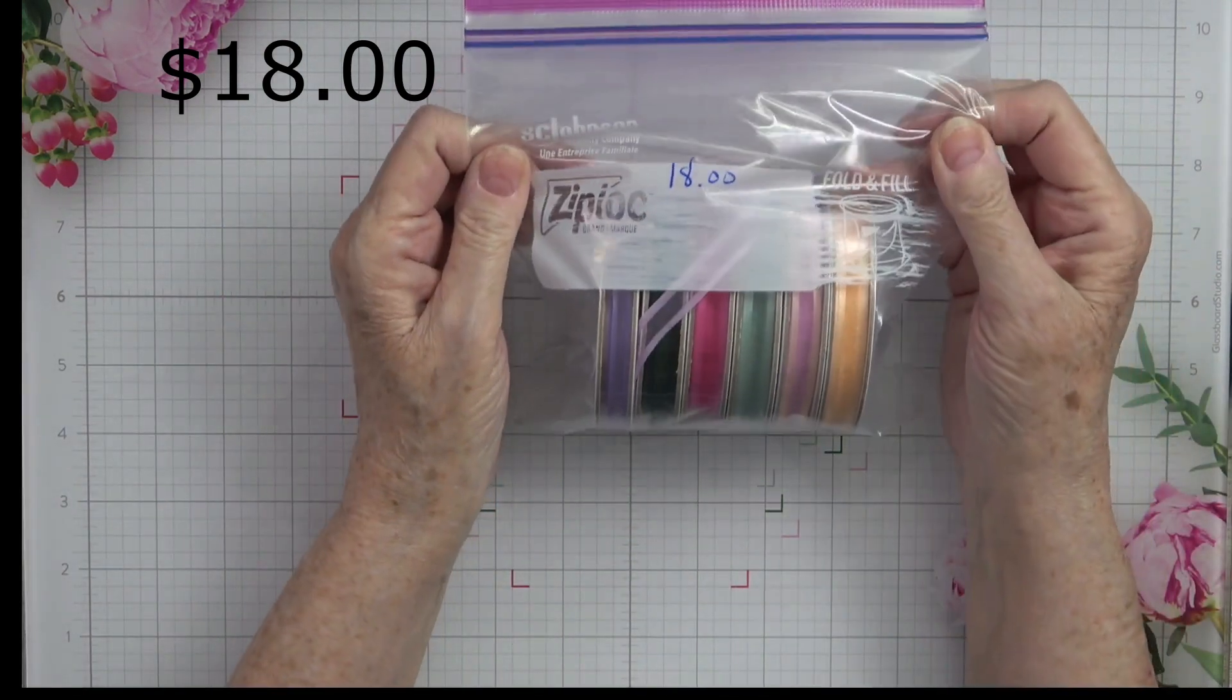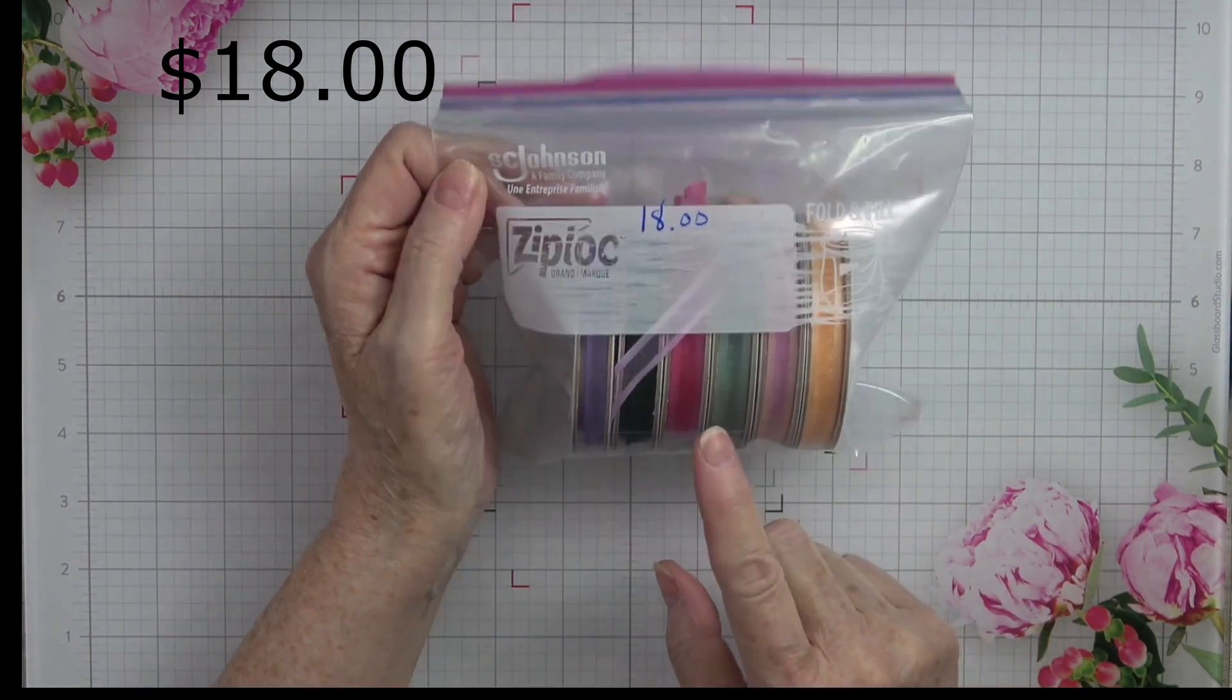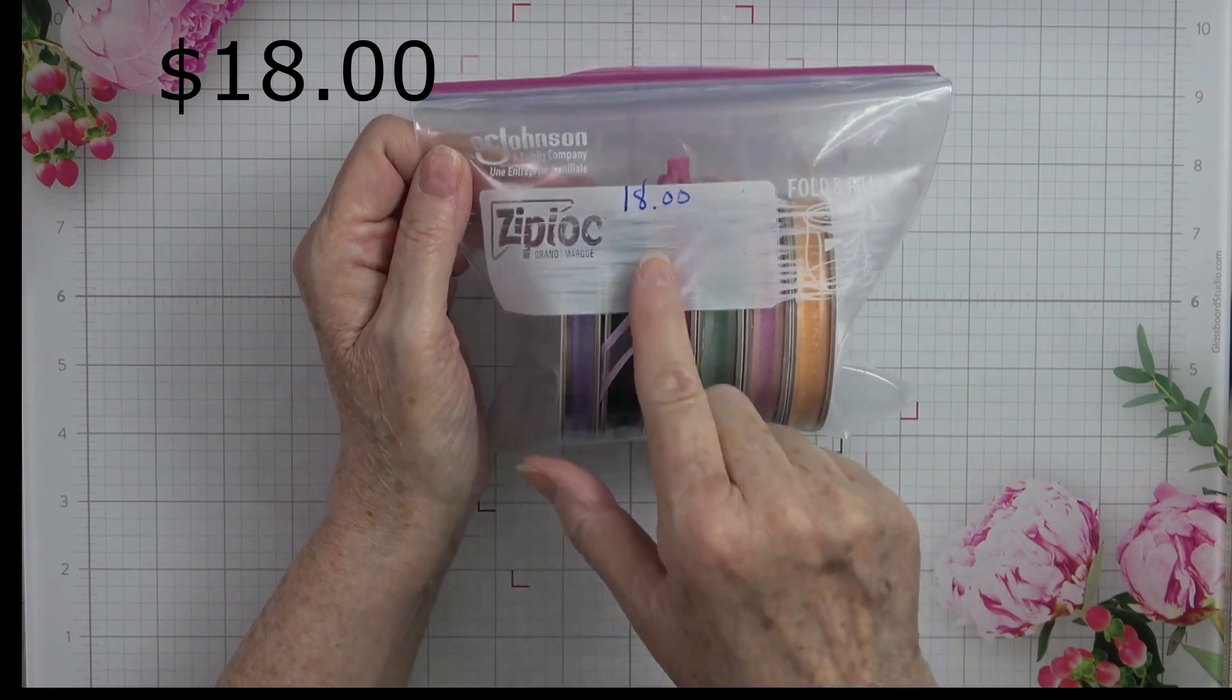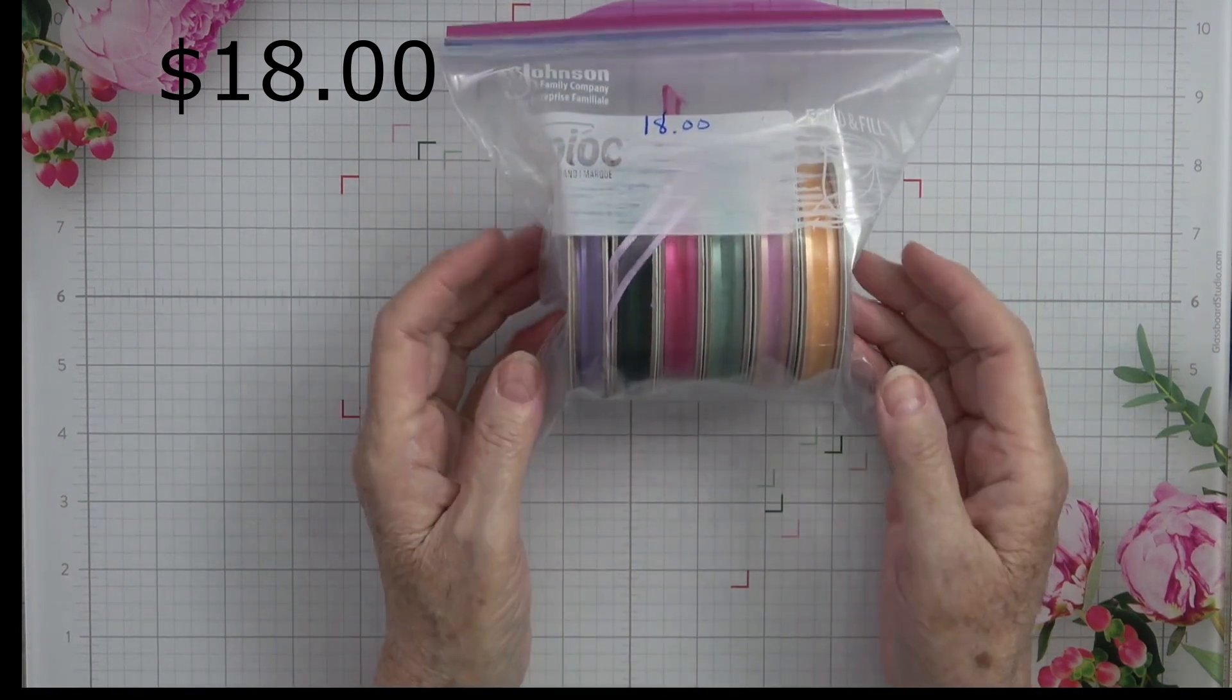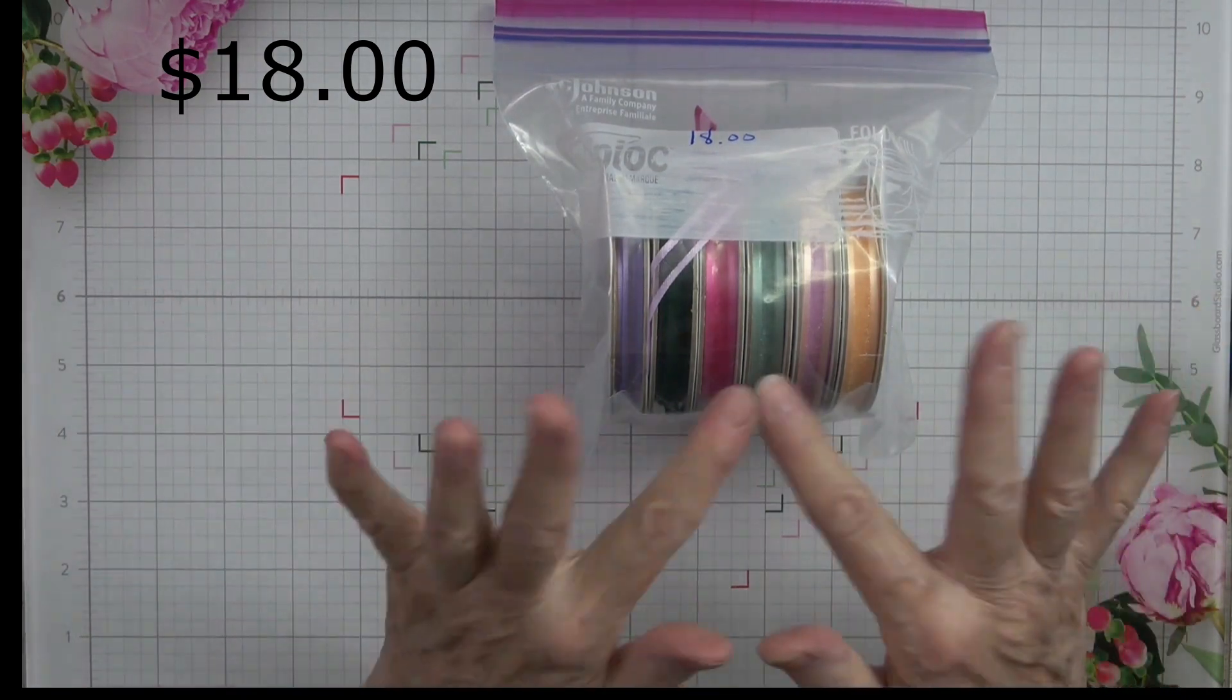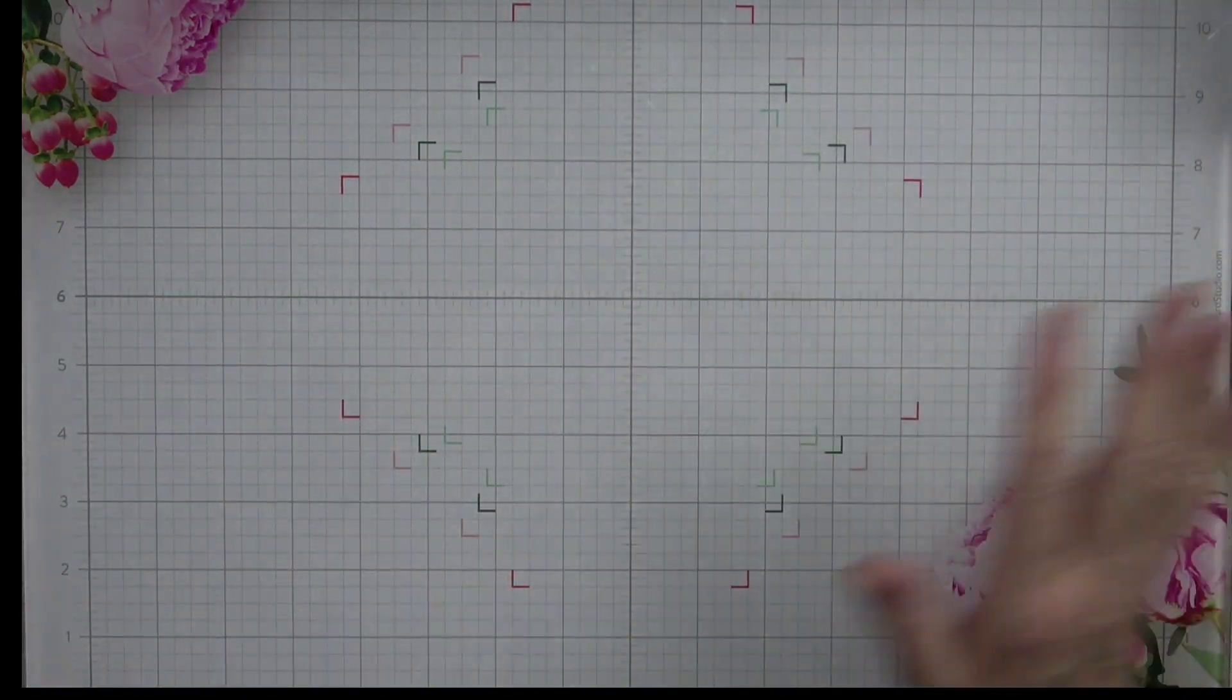This is absolutely gorgeous ribbon. It's satin on the side and then sheer in the middle, and this is one, two, three, four, five, six rolls, and I'm selling it for $18. I'm not going to break the packs up. If someone wants this particular design of ribbon, you get the whole thing for $18.